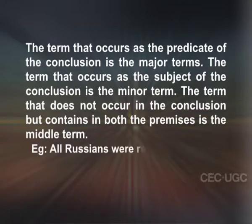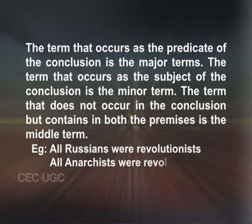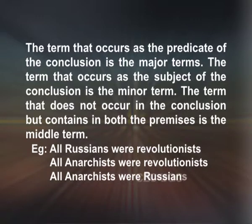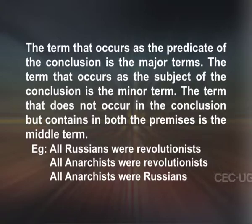Example: All Russians were revolutionists. All anarchists were revolutionists. Therefore, all anarchists were Russians. Here, anarchist is the minor term, Russians is the major term, and the middle term is revolutionist. This is the standard form of a categorical syllogism.